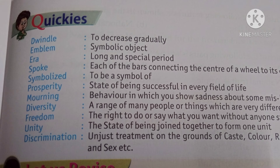Vocabulary: Dwindle means to decrease gradually. Emblem means a symbolic object. Era means a long period. Spoke means each of the rods connecting the hub to the rim of a wheel. Symbolized means to be a symbol of. Prosperity means the state of being successful in every field of life.